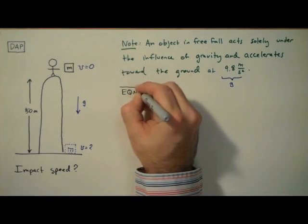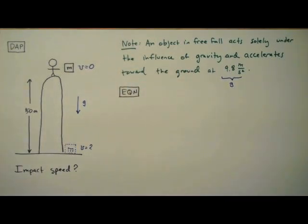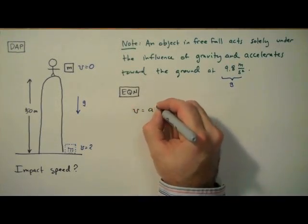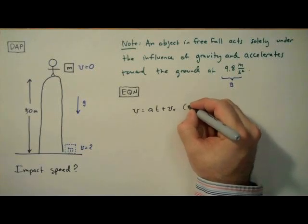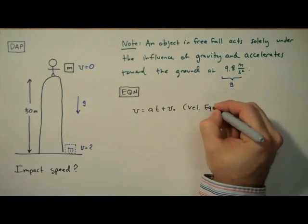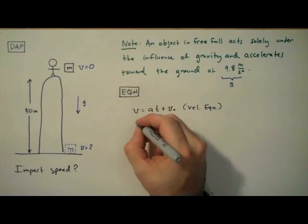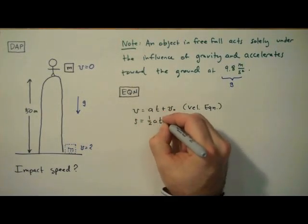There are three equations that we can use to analyze a body undergoing constant acceleration. They are called the kinematic equations. Some of us in Detroit affectionately refer to them as the big three. The first of which is the velocity equation. Here, t represents time. And if we integrate the velocity equation with respect to time, we get the displacement equation.